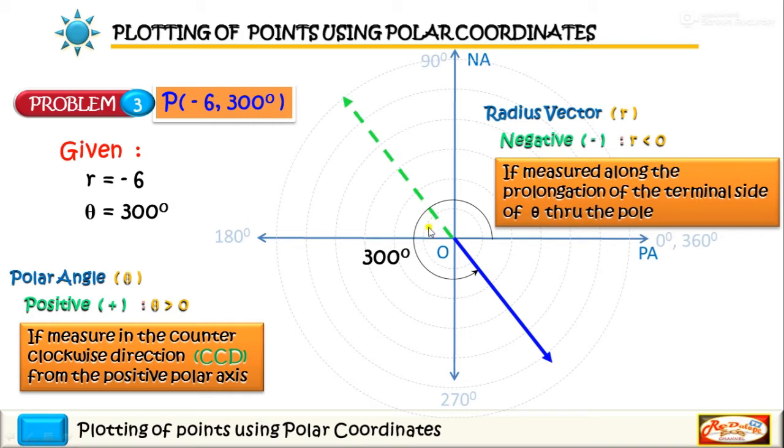So we have the first unit, the second unit, the third unit, the fourth unit, the fifth unit and the last unit. And it happens to be R equals 6. There is no need to indicate the negative sign here. Okay, so we have here the point P happens to be negative 6 and 300 degrees.